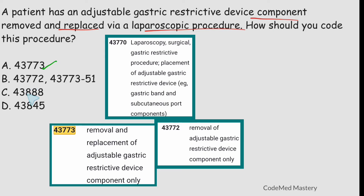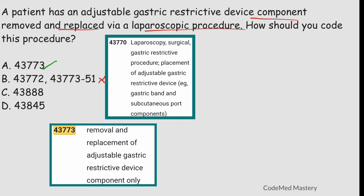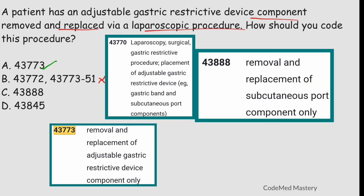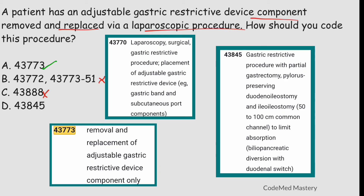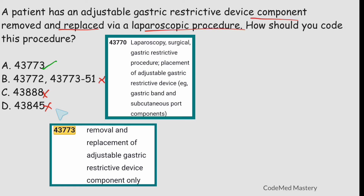Eliminate option B. Option C — 43888 — is for gastric restrictive procedure, removal and replacement of subcutaneous port component only, and it is not a laparoscopic code, so eliminate it. Option D — 43845 — is for gastric restrictive procedure with partial gastrectomy, which is not mentioned in the scenario. Eliminate option D. Option A, 43773, is the right answer.